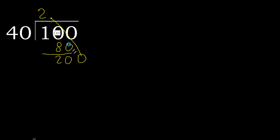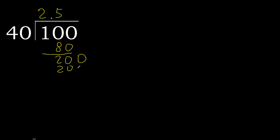0 point. Bring down 0 to make 200. 40 multiplied by 5 is 200 — ok, it is not greater. Subtract: 200 minus 200 is 0, therefore finish.